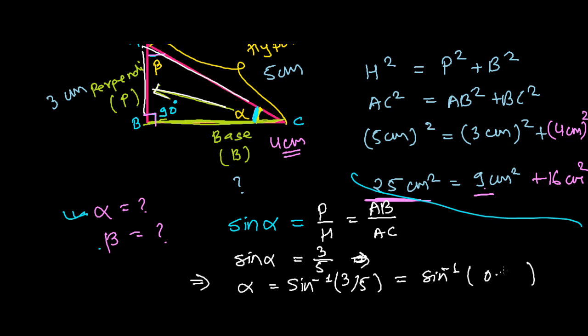3 over 5 is 0.6. So now from the calculator, shift sine inverse 0.6, that's 36.86 degrees. This is the angle alpha. So we get 36.86 degrees. So if this is 36.86 degrees, then automatically you can find out beta.